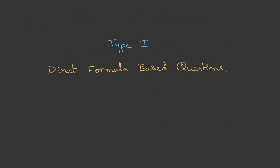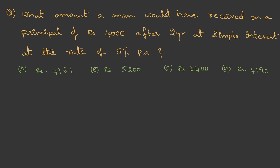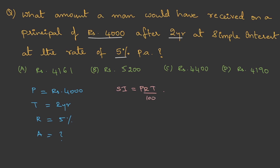Let's try the first type — direct formula-based questions. What amount would a man receive on a principal of rupees 4,000 after two years at simple interest at the rate of 5% per annum? Let me write the given data: Principal = ₹4,000, Time = 2 years, Rate = 5%, and we need to calculate the Amount.